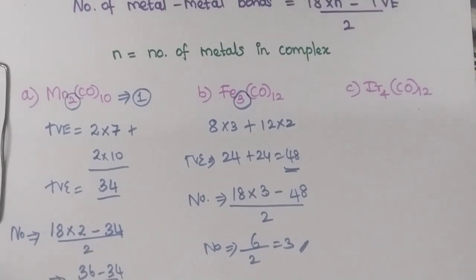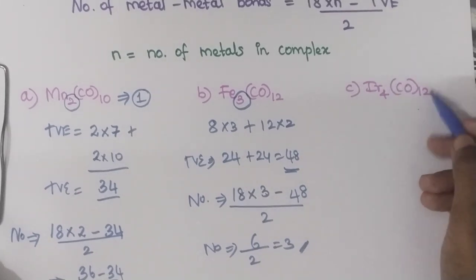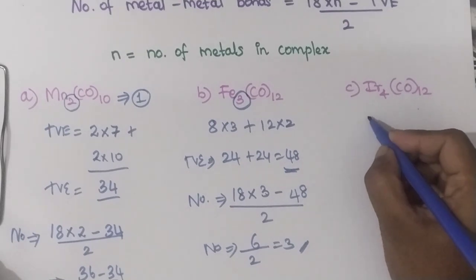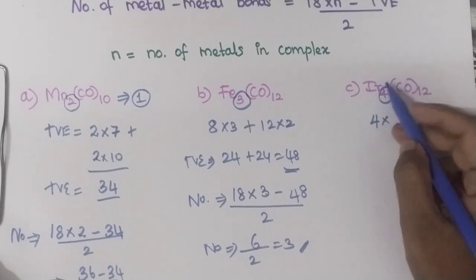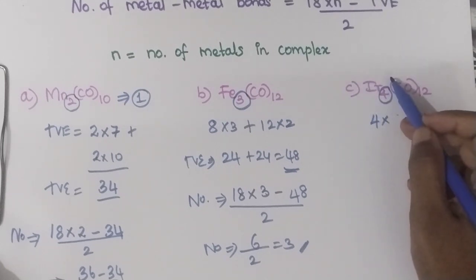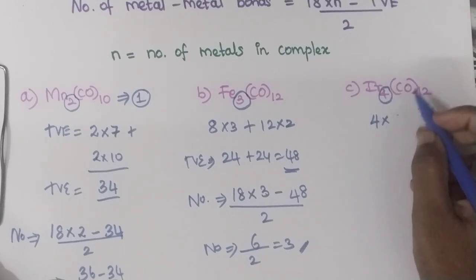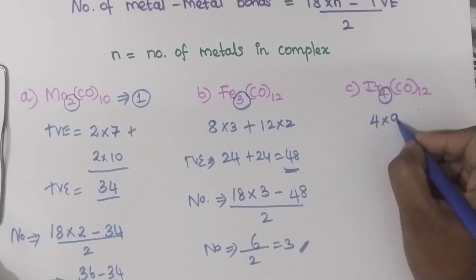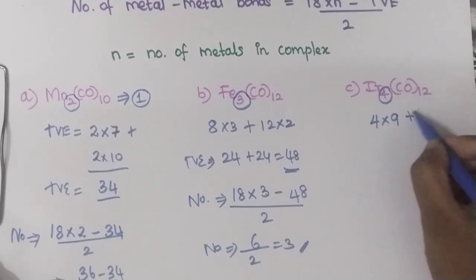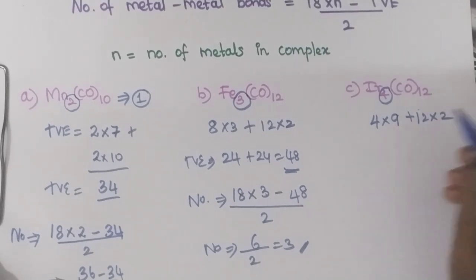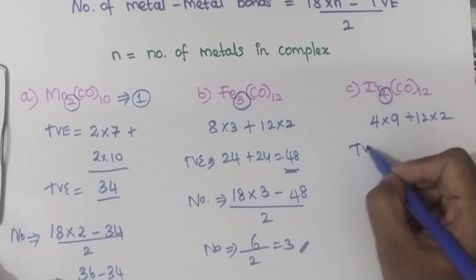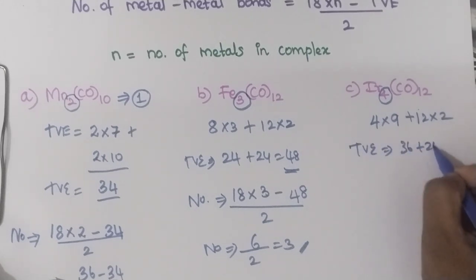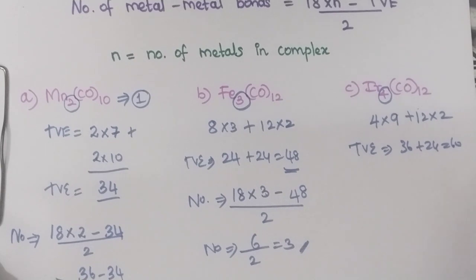Similarly, you can find the metal-metal bonds in Ir₄CO₁₂. Here, the number of metal atoms is 4. Iridium comes under the cobalt family — cobalt has a valence electron of 9, hence iridium also has 9. So 4 × 9 = 36, and 12 carbonyls give 12 × 2 = 24. Total valence electron count: 36 + 24 = 60.